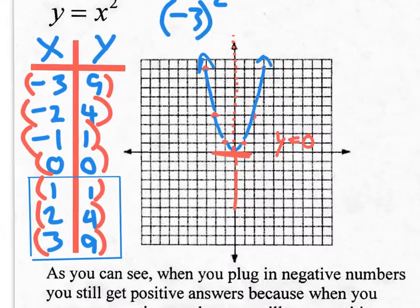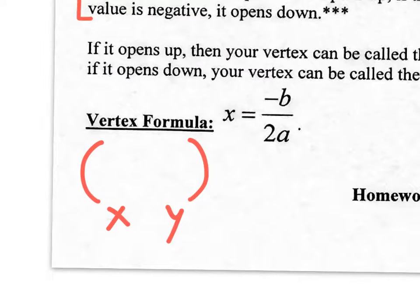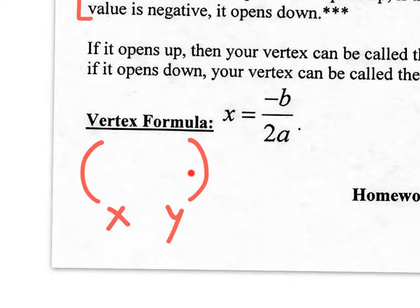The vertex is the highest or lowest point of a parabola — the most important point. Not only is it the highest or lowest point, but it's also the point that defines your axis of symmetry, the reflection line that passes right through it. So the vertex is a coordinate — an X and Y value — found using x equals negative b over 2a, then plug in to find Y.